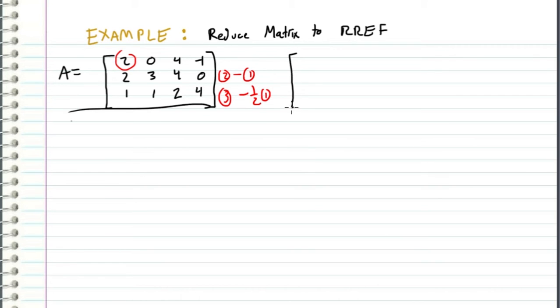And what we end up with is 2, 0, 4, negative 1. 2 minus 2 is 0, 3 minus 0 is 3, 4 minus 4 is 0, and then we get a positive 1 right here. Then we look at the third row, we get a 0 right here, a 1 right here, a 0 right here, and a 9 halves right here.